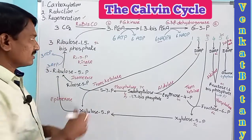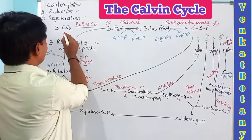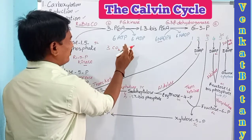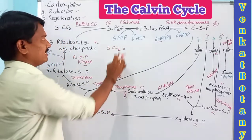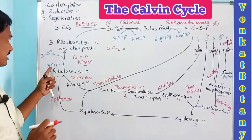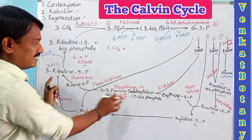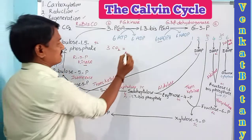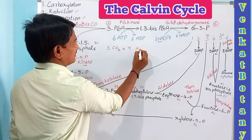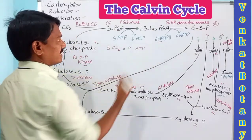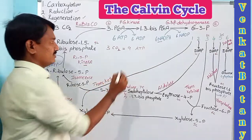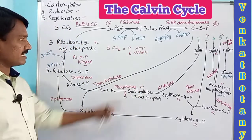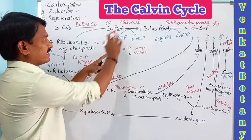For the formation of complete glucose (a six-carbon compound), six CO2 molecules must enter the Calvin cycle, requiring 18 ATP and 12 NADPH. So per CO2 molecule, three ATPs and two NADPH are required. Three CO2 molecules require three Calvin cycles, and six CO2 molecules require six Calvin cycles.